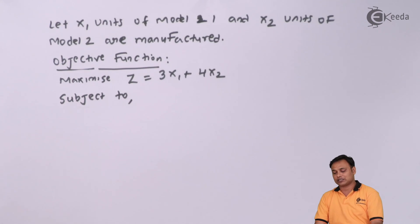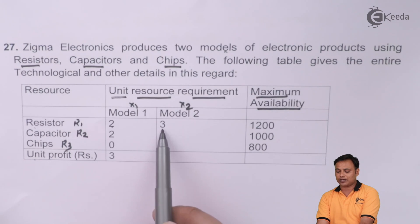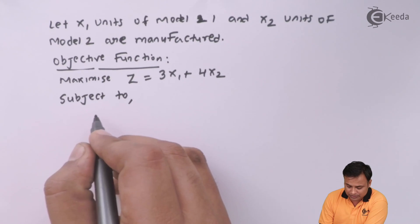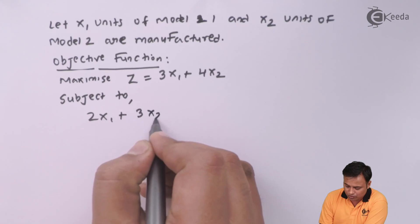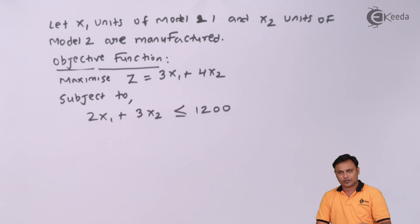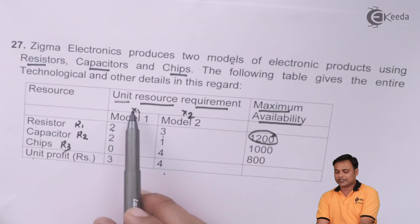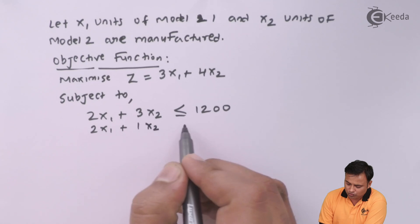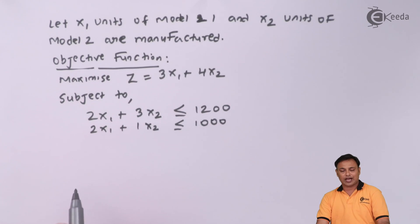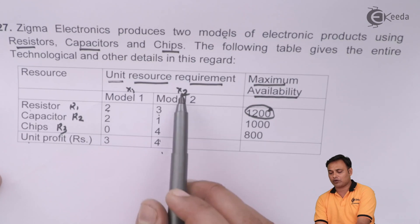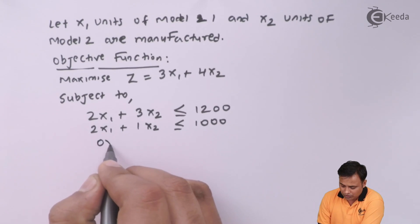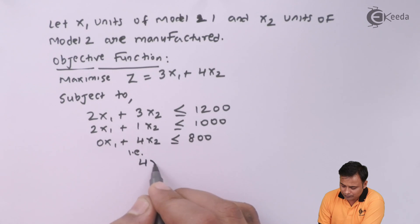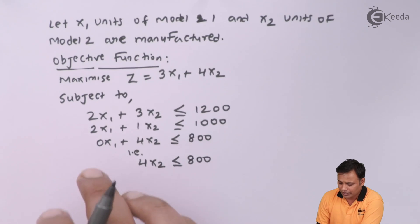What are my constraints? My first constraint is 2x1 + 3x2 ≤ 1200, which is the total supply for resistors. My second constraint will be 2x1 + x2 ≤ 1000. And my last constraint will be 4x2 ≤ 800, since the coefficient of x1 is 0, we can ignore writing 0x1.